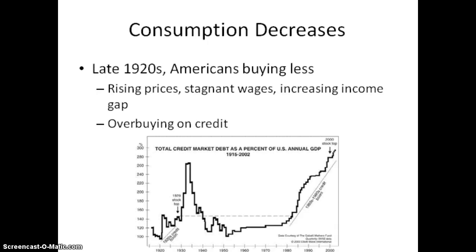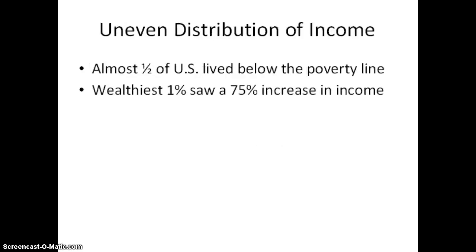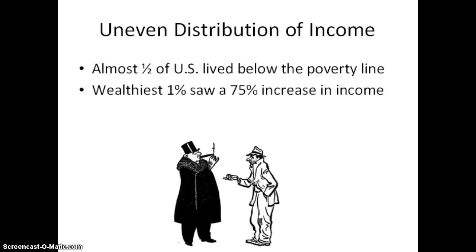Consumers had much less money to spend. As the income of farmers fell, they bought fewer goods. By the late 1920s, Americans were buying less. There were rising prices, stagnant wages, and an unbalanced distribution of income. There was also overbuying on credit. Production began to expand faster than wages, increasing the gap between the rich and the poor. Almost half of the U.S. lived below the poverty line, while the wealthiest 1% saw a 75% increase in income.